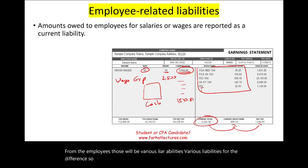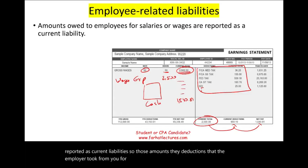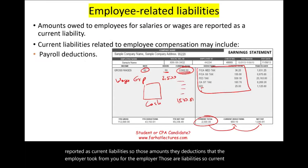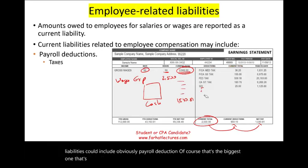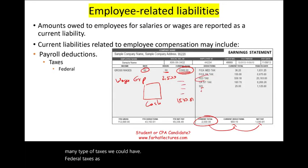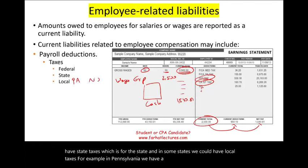Simply put, amounts owed to employees for salary and wages are reported as current liabilities. The deductions the employer withheld from the employee are liabilities. These can include payroll deductions such as federal taxes, state taxes, and in some states local taxes — for example, Pennsylvania has a local tax but New Jersey does not.